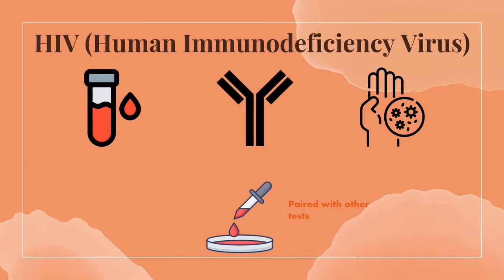For example, it cannot differentiate between HIV-1 and HIV-2, which is an important distinction to make as they have separate treatment regimens. The Western blot is often paired with these other tests to confirm the specific diagnosis.